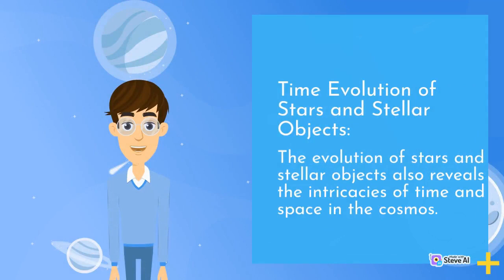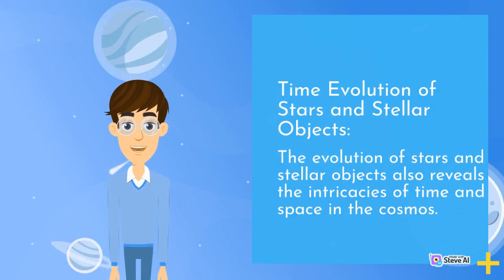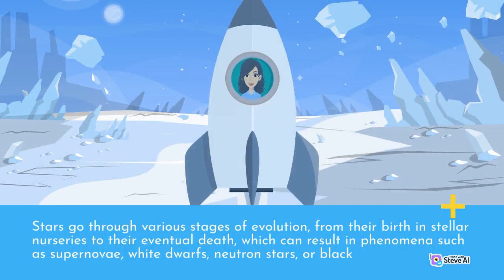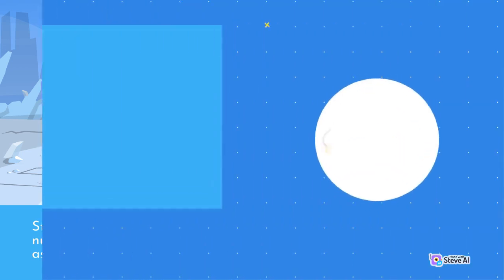The evolution of stars and stellar objects also reveals the intricacies of time and space in the cosmos. Stars go through various stages of evolution, from their birth in stellar nurseries to their eventual death, which can result in phenomena such as supernovae, white dwarfs, neutron stars, or black holes.